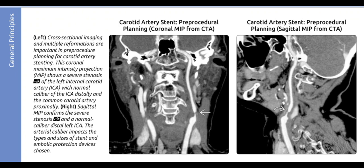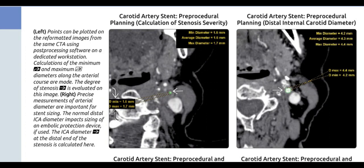The arterial caliber impacts the types and sizes of stent and embolic protection devices chosen. Points can be plotted on the reformatted images from the same CTA using post-processing software on a dedicated workstation. Calculations of the minimum and maximum diameters along the arterial course are made, and the degree of stenosis is evaluated. Precise measurements of arterial diameter are important for stent sizing.